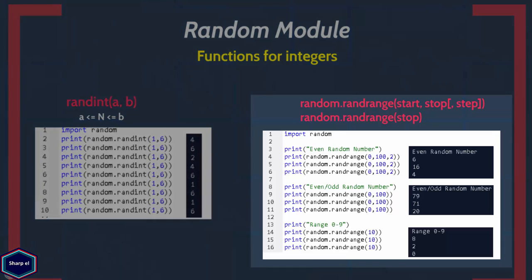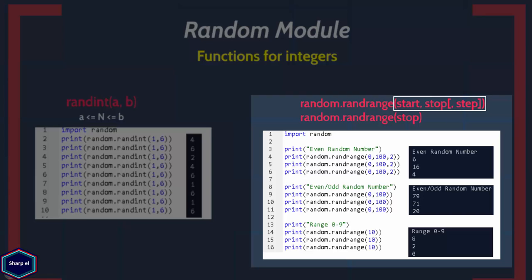If you are already familiar with the standard function range(), then it is very easy to understand the randrange() function. The randrange() function returns a randomly selected element from the range. The argument start is the starting point of the range and will be included, whereas stop is the terminating point and will be excluded. The optional argument step is the difference between two consecutive values.